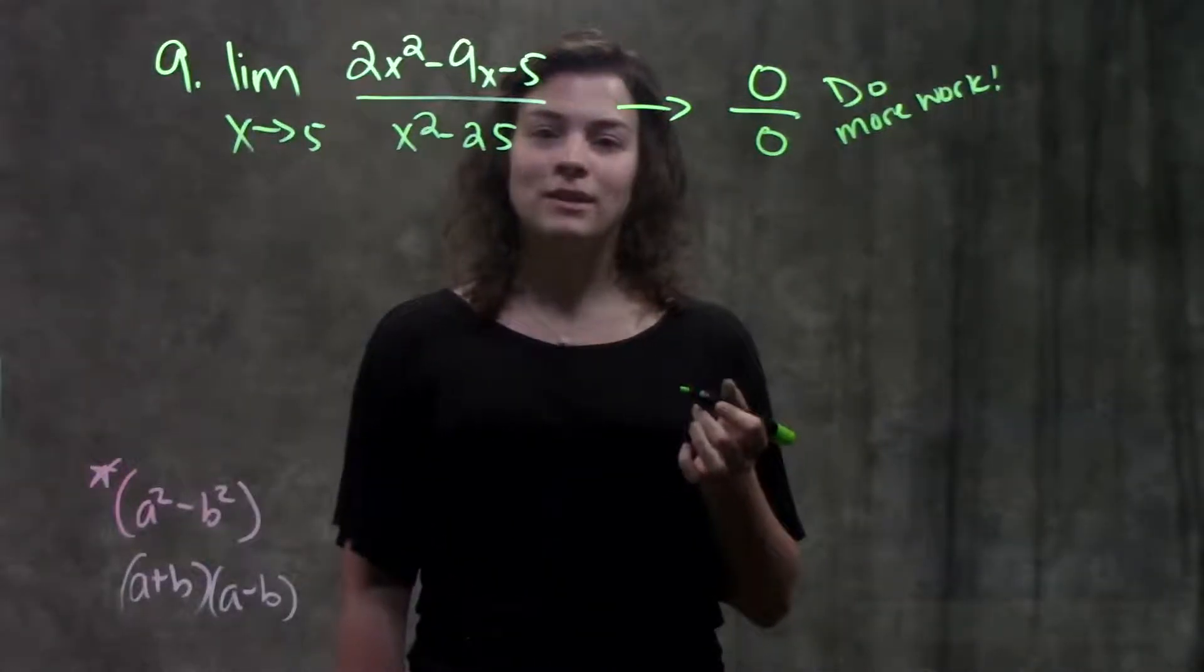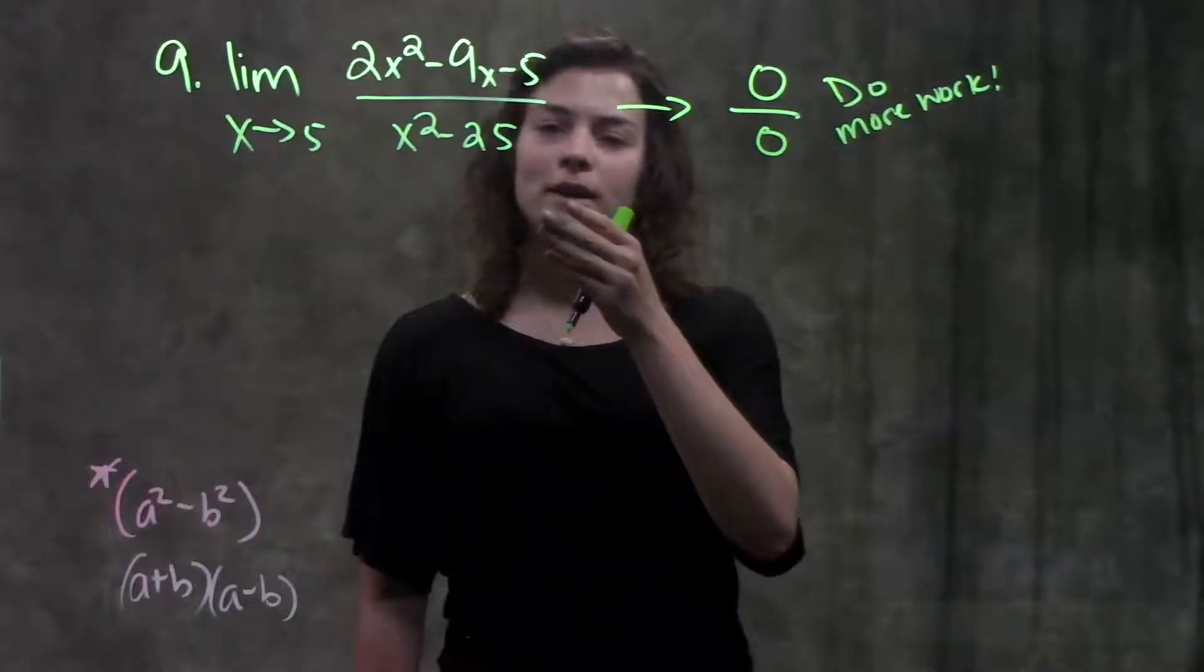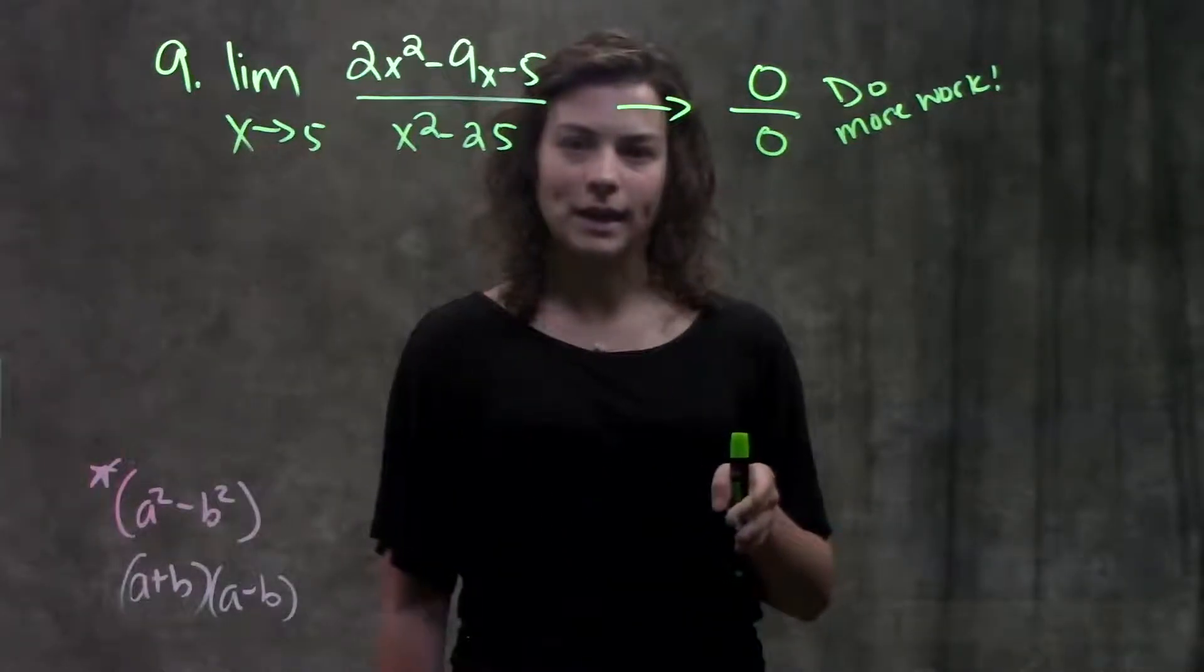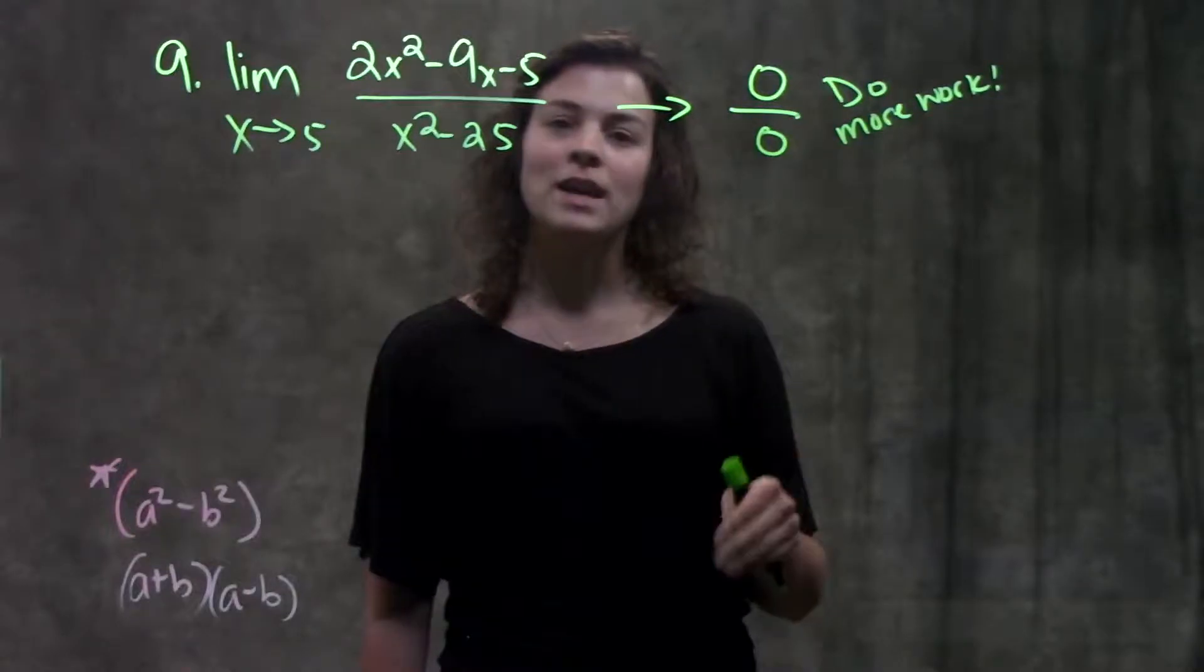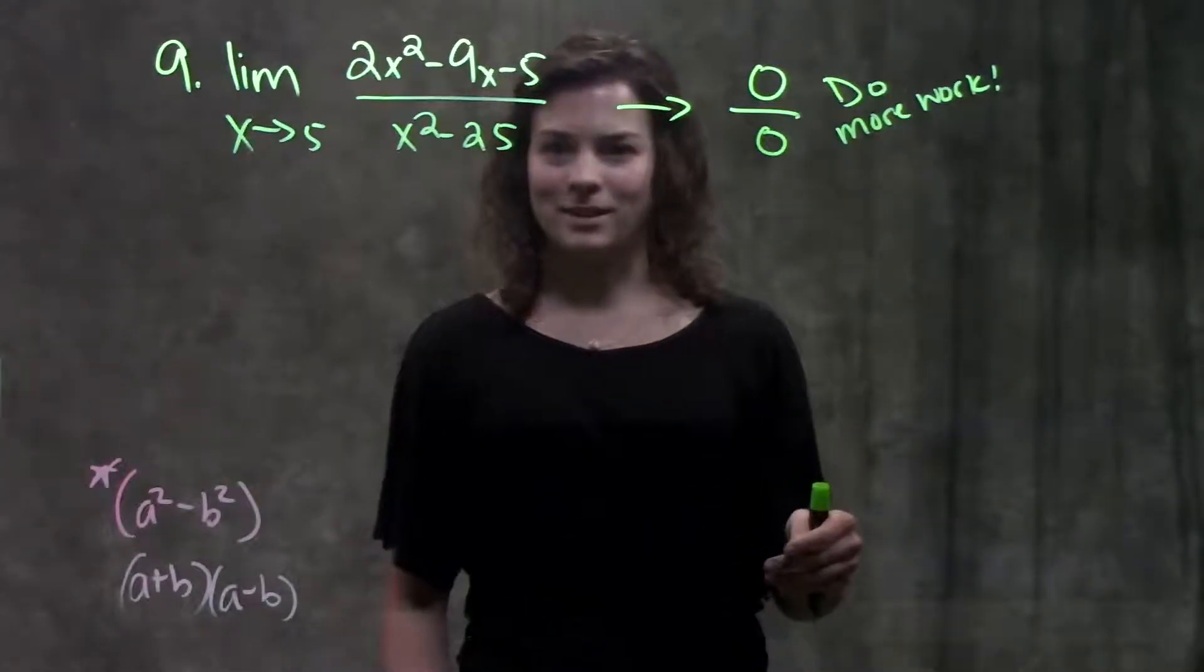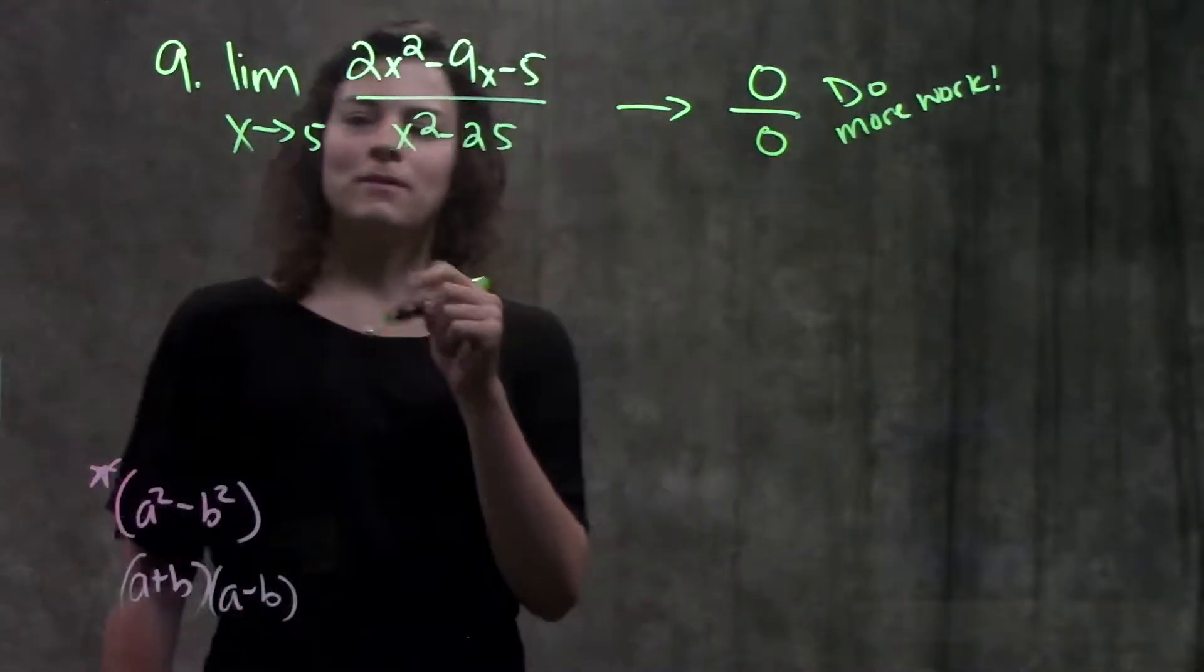And what kind of work do we need to do? Well, we're going to try to simplify our function so that hopefully something will cancel out. We can try direct substitution again into our simplified function and hopefully get a valid answer. Okay, so let's try to simplify this function.